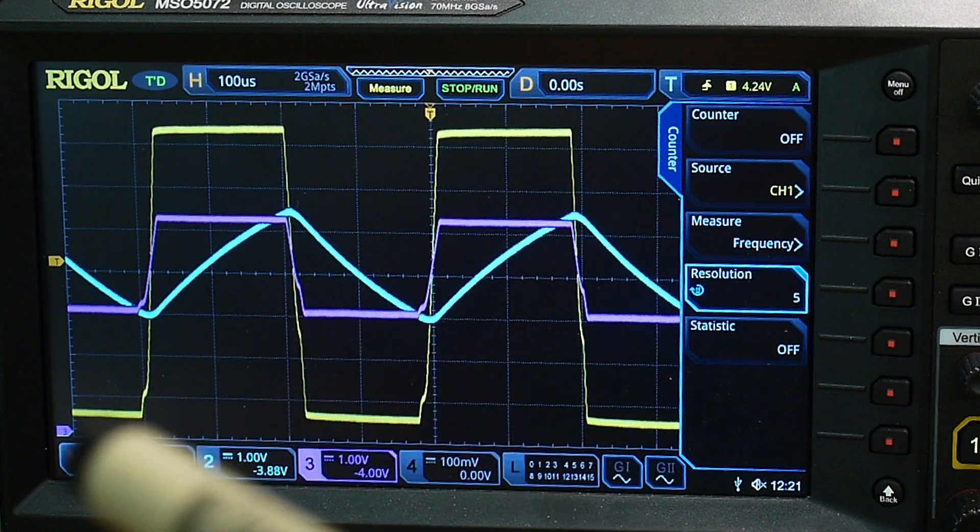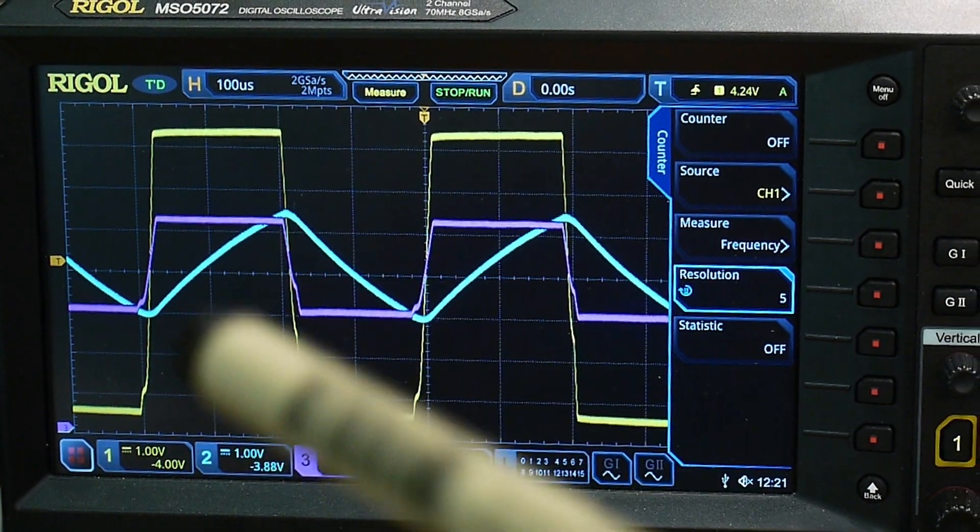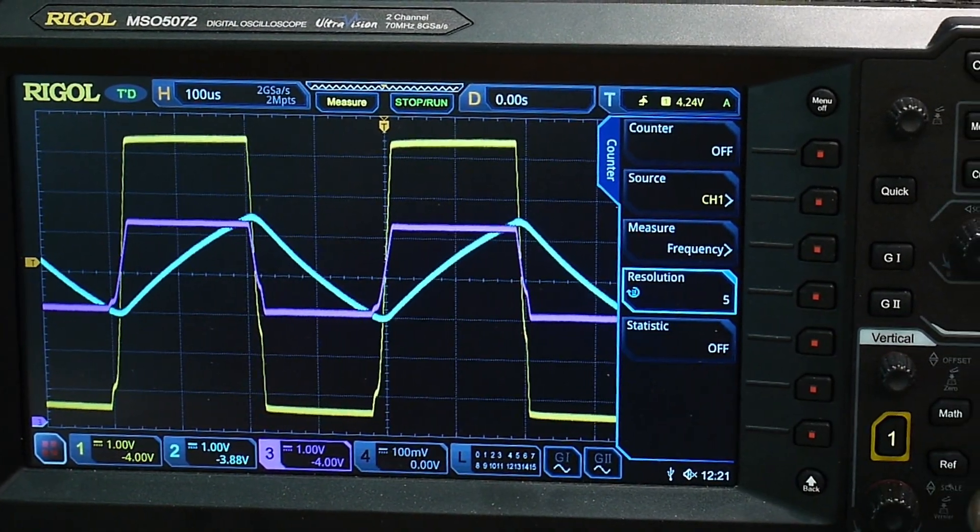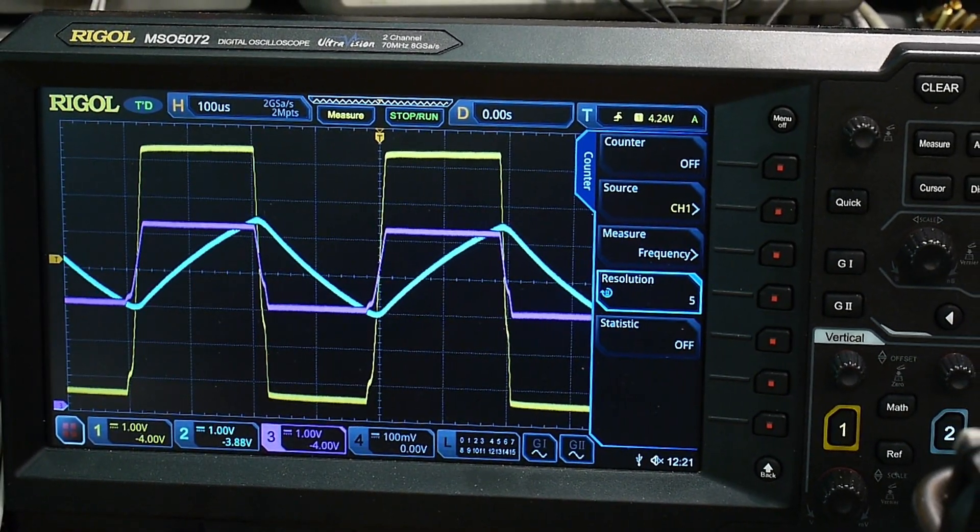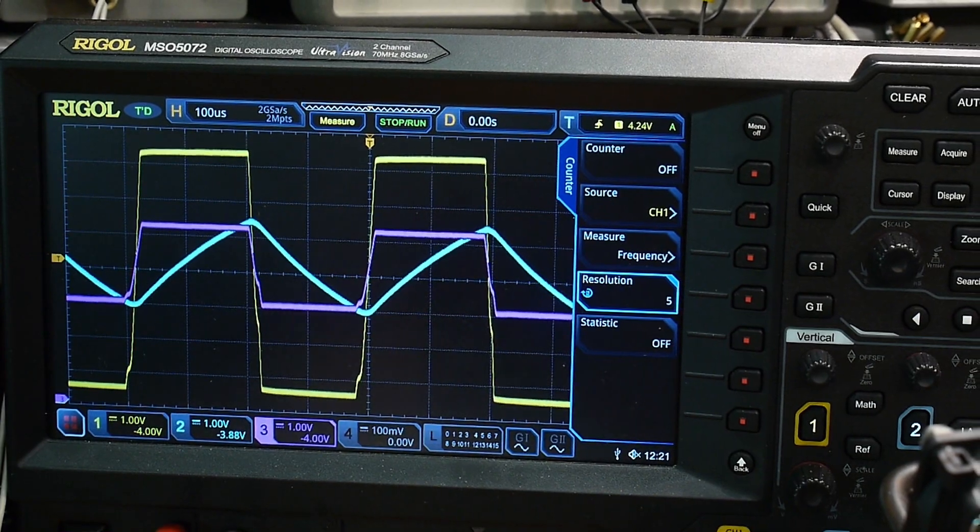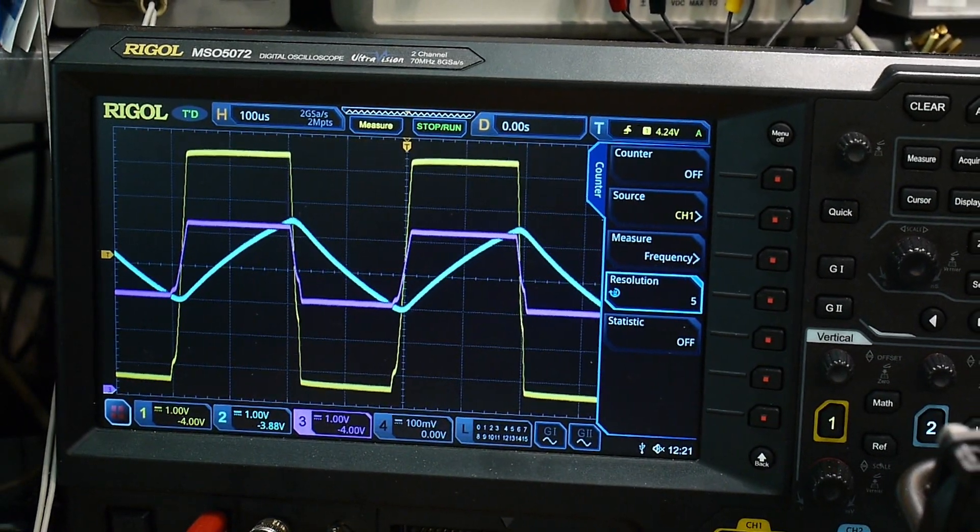So the cyan is the minus input and the magenta is the plus input. So there you go. It's an easy way to make an oscillator.